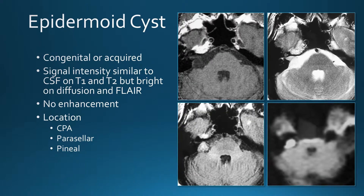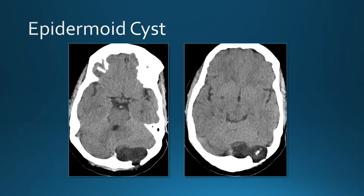Epidermoid cysts can be congenital or acquired, usually congenital. On T1 and T2 the signal is quite similar to CSF, but the key is on diffusion and FLAIR — these will be bright. No enhancement. Common locations are the cerebellopontine angle cistern, parasellar region, and pineal region. On CT they can occasionally have calcifications, and this one involves the bone, showing very smooth erosion indicating a long-standing process.